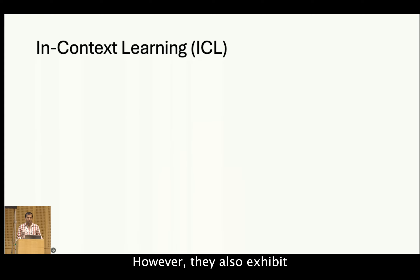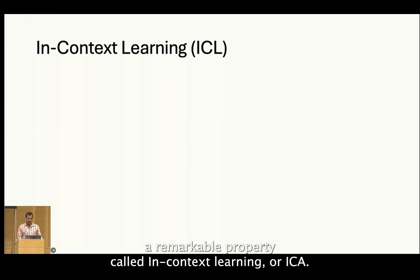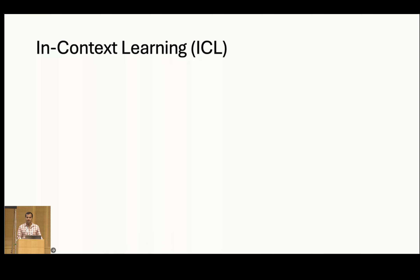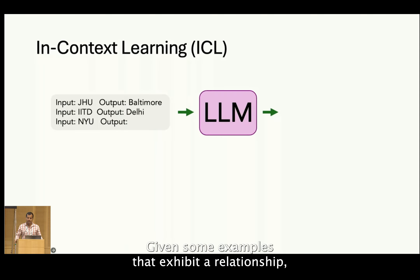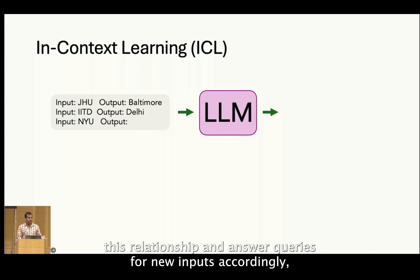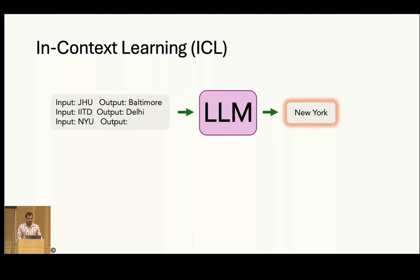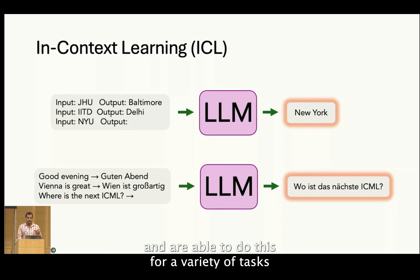However, they also exhibit a remarkable property called in-context learning or ICL. Given some examples that exhibit a relationship, a language model can understand this relationship and answer queries for new inputs accordingly. And LLMs are able to do this for a variety of tasks like translation, sentiment prediction, etc.